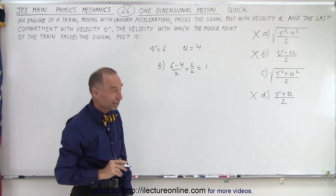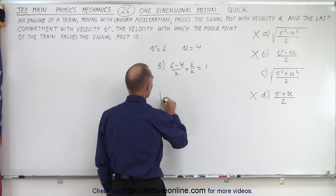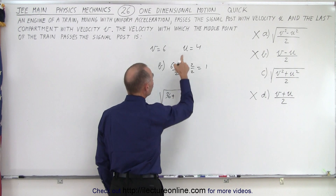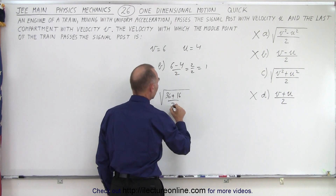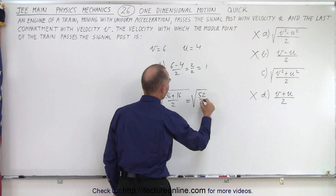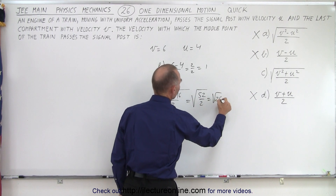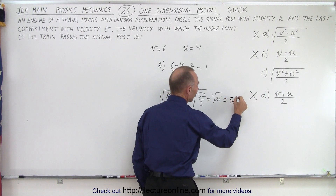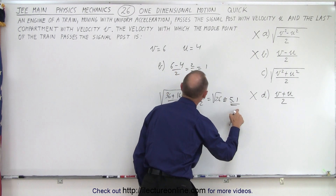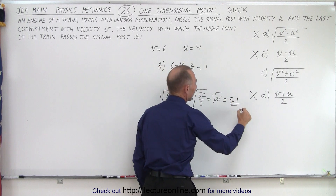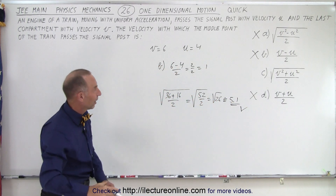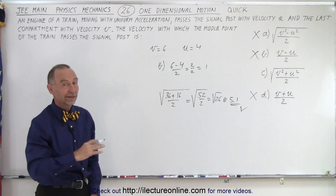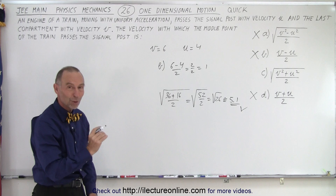That one remaining option is the correct answer. Quickly checking: we take the square root of V squared — which is thirty-six — plus U squared — which is sixteen — divided by two. That equals the square root of fifty-two divided by two, which equals the square root of twenty-six. That's bigger than the square root of twenty-five, so approximately five point one — closer to six than to four. That is exactly what we're expecting, so that has to be the right answer. By quickly substituting a few numbers, we can pick the right answer and move on.